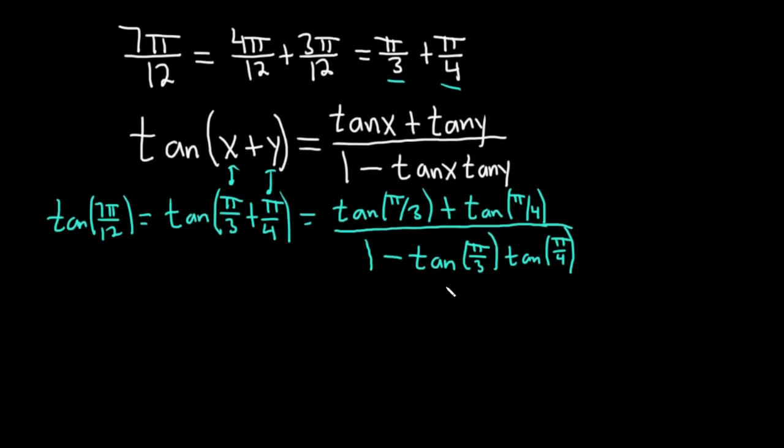This is equal to, so the tangent of π over 3 is the square root of 3, that's just from memory, and the tangent of π over 4 is 1, also just from memory, over 1 minus the square root of 3 times 1. We end up with 1 plus square root of 3 over 1 minus square root of 3.